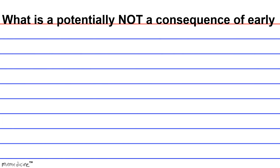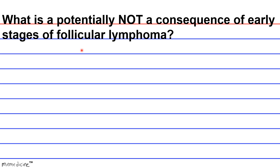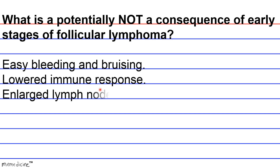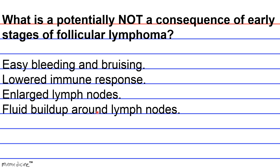Question: What is potentially NOT a consequence of early stages of follicular lymphoma? A) Easy bleeding and bruising. B) Lowered immune response. C) Enlarged lymph nodes. D) Fluid buildup around lymph nodes.